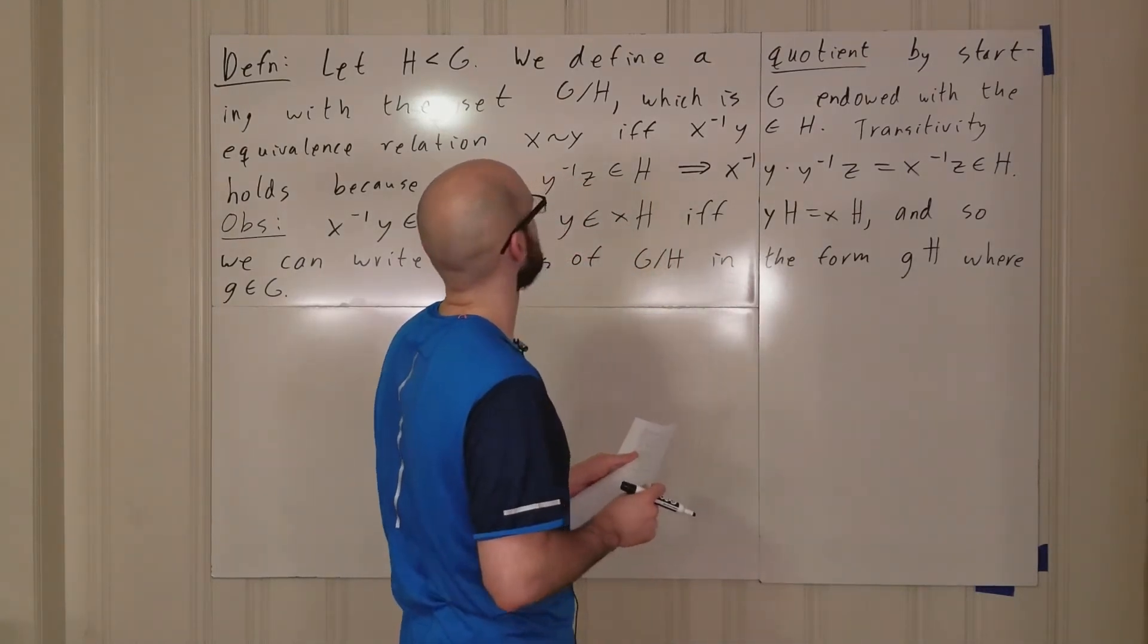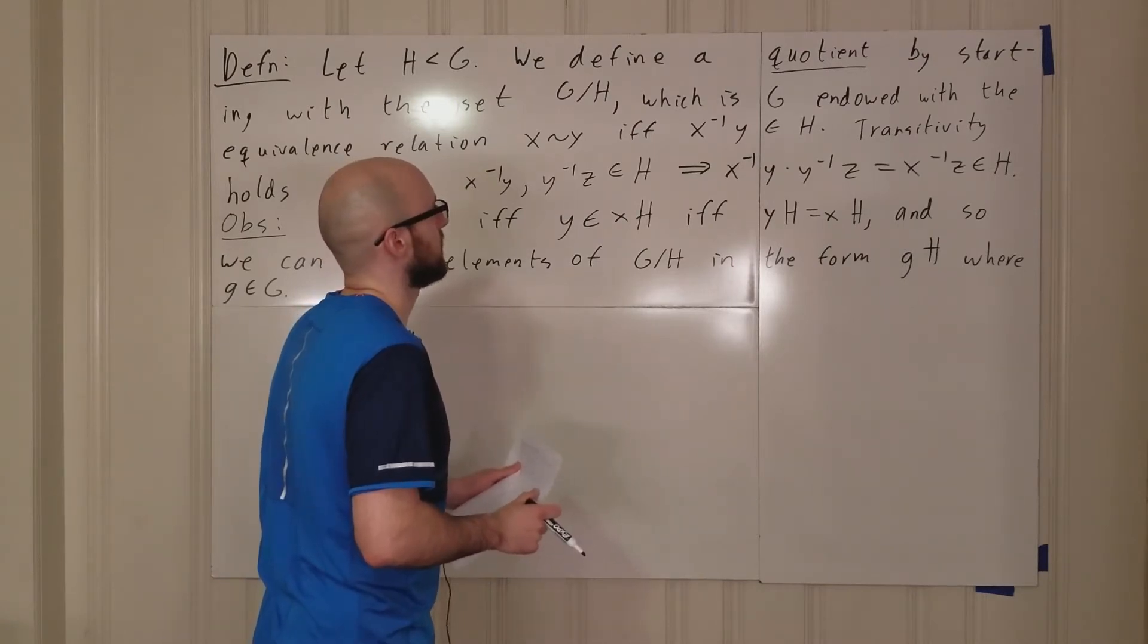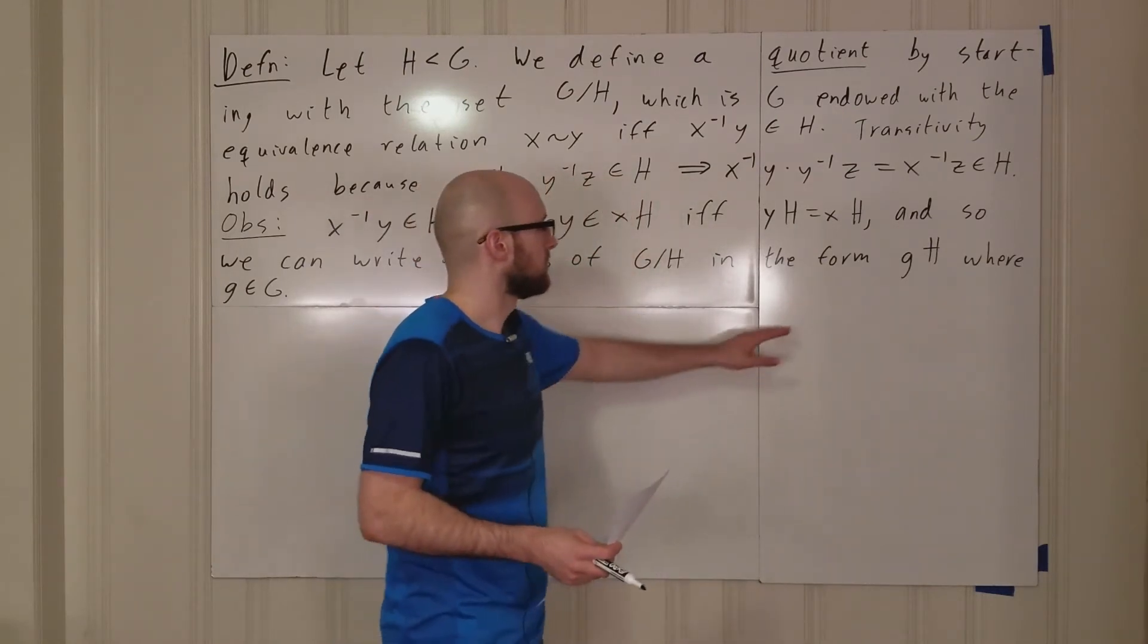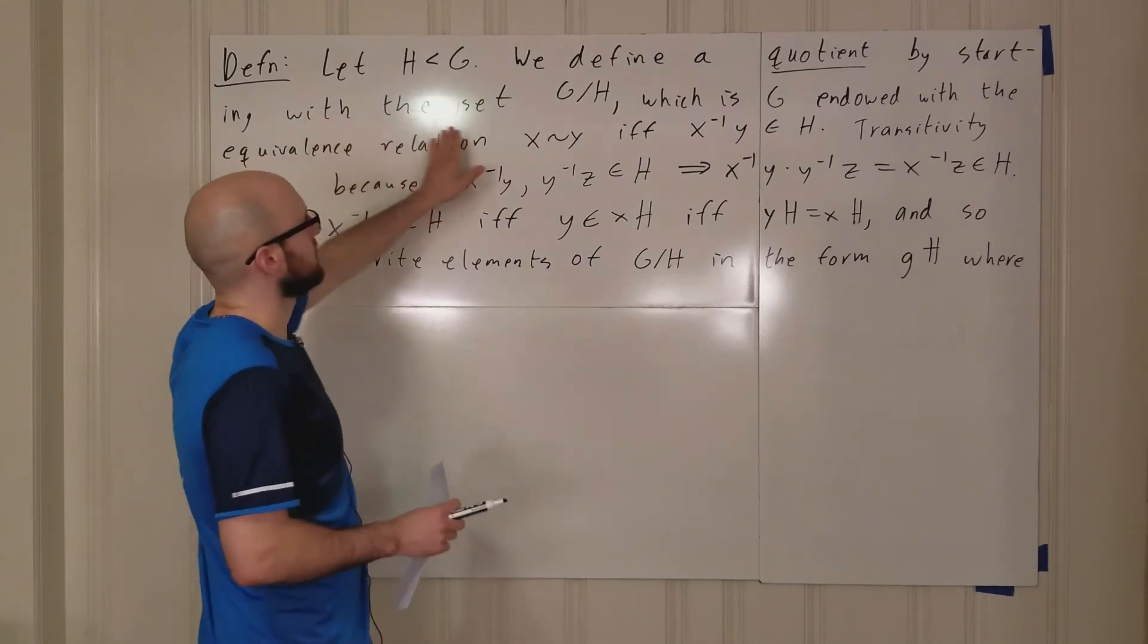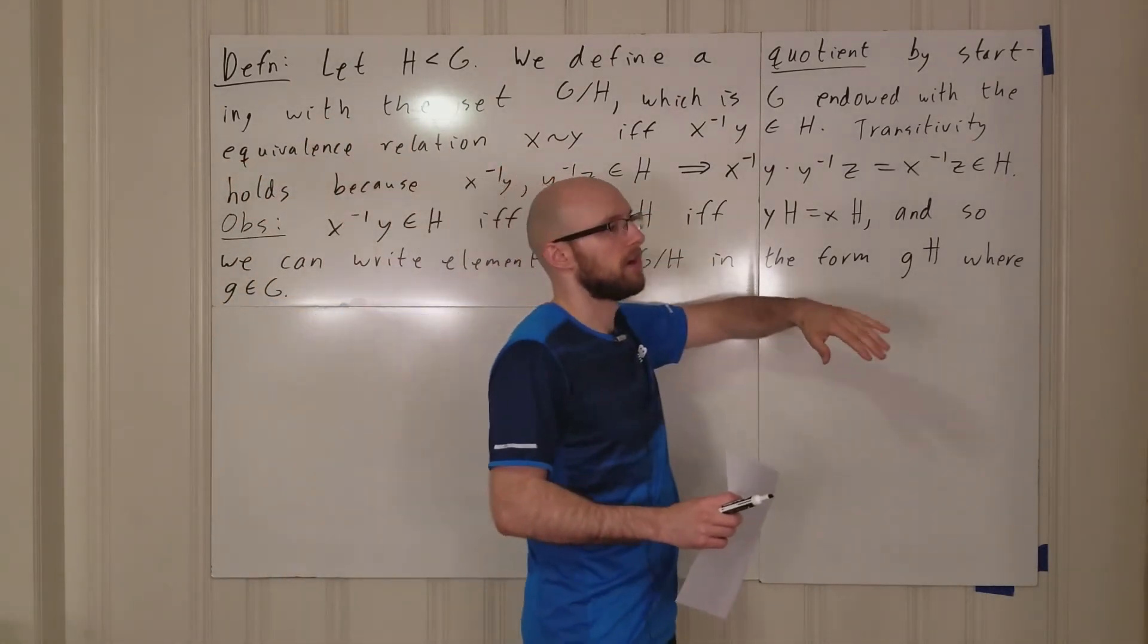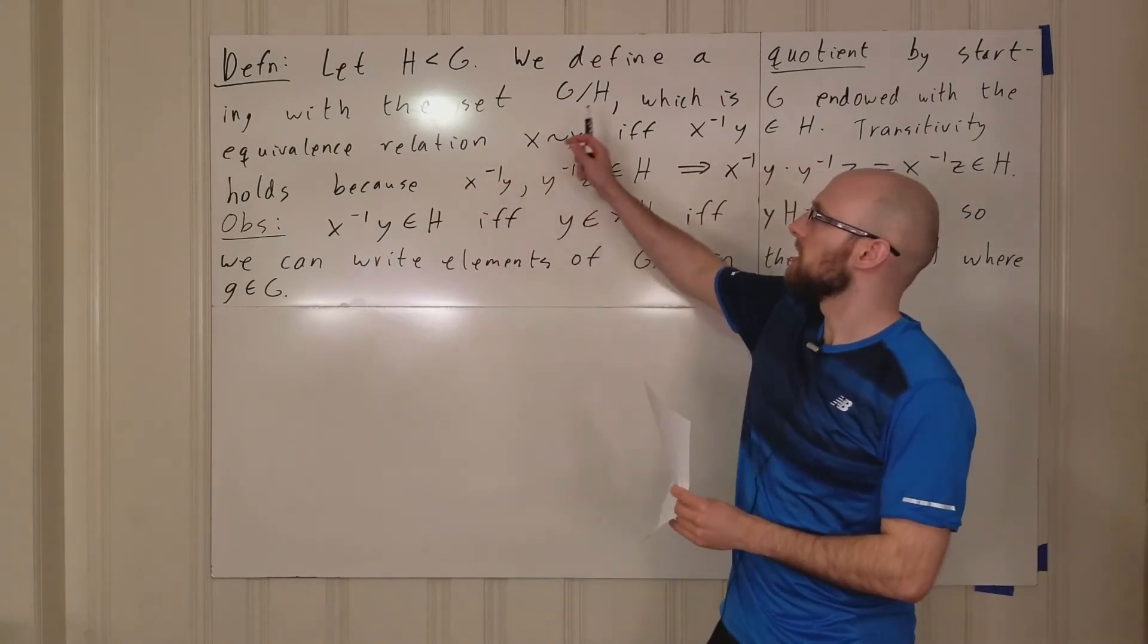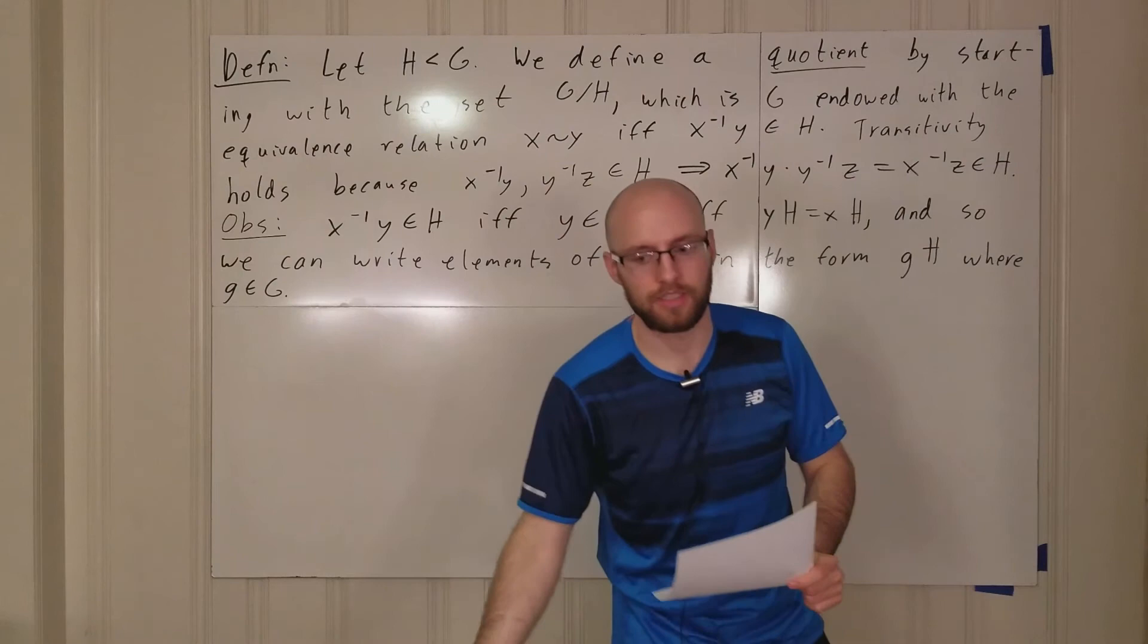Oh why am I talking about cosets? I haven't even described what a coset is. What I mean is equivalence class. I'm getting ahead of myself. Of course, the quotient is the set with an equivalence relation, so G mod H is a collection of equivalence classes.